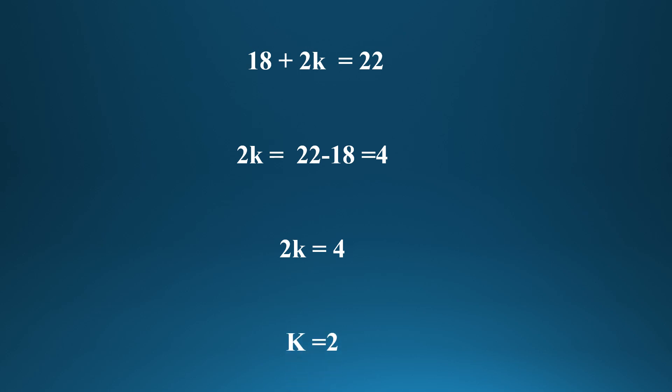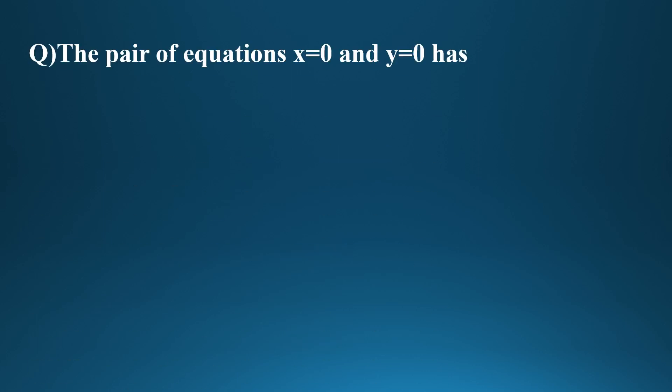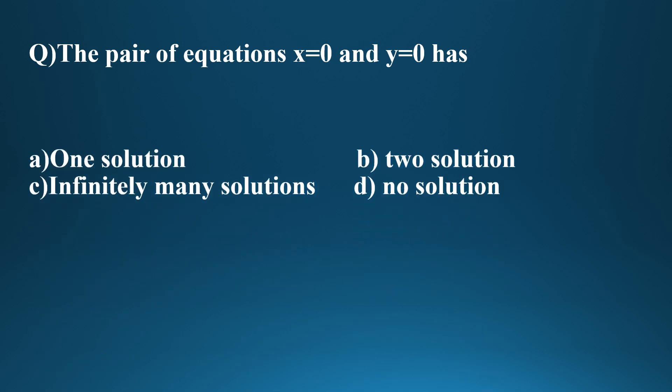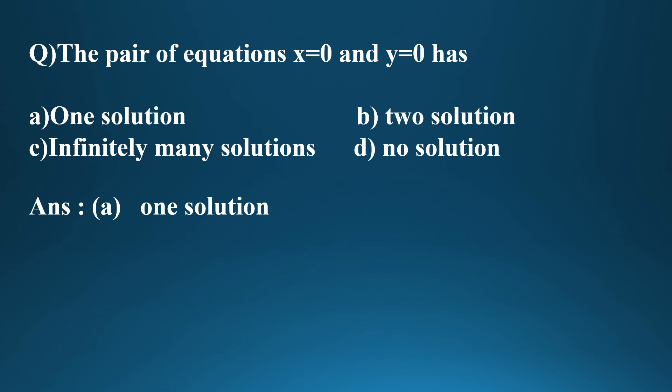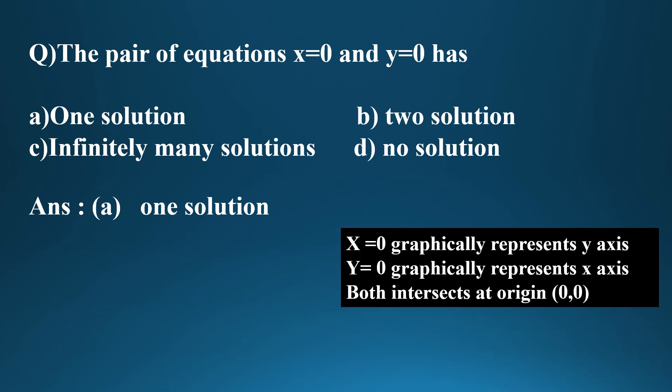Next question: The pair of equations x = 0 and y = 0 has options: one solution, two solutions, infinitely many solutions, or no solution. Answer: one solution.